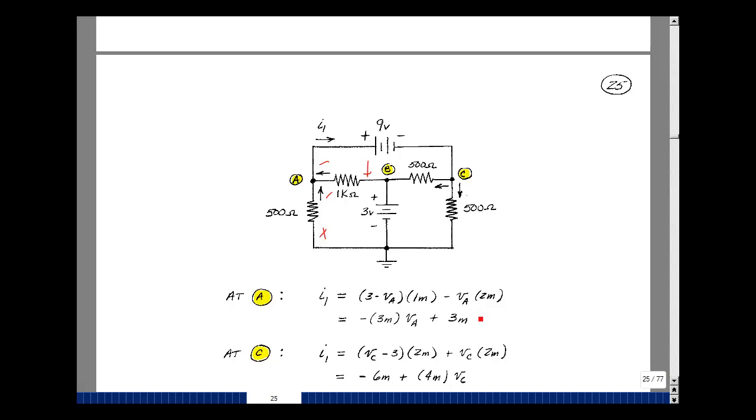Let's group together all the things that multiply V sub A, and then actually a constant here. So I've got a minus 1 milli times V sub A, and then a minus 2, so I've got minus 3 milli times V sub A, and then I've got also a constant of 3 times 1 milli.